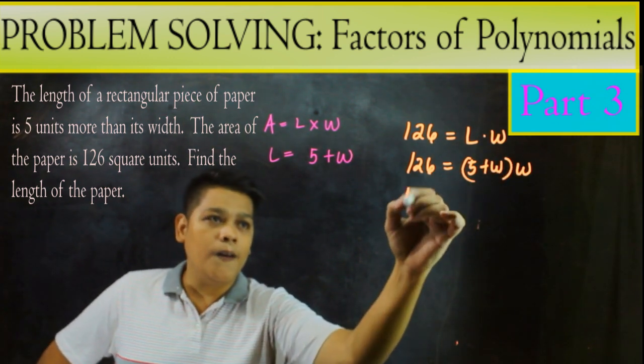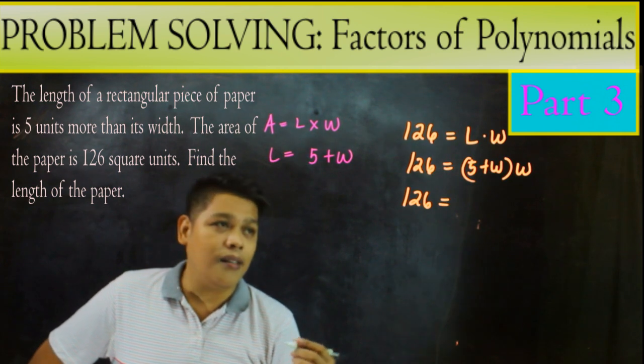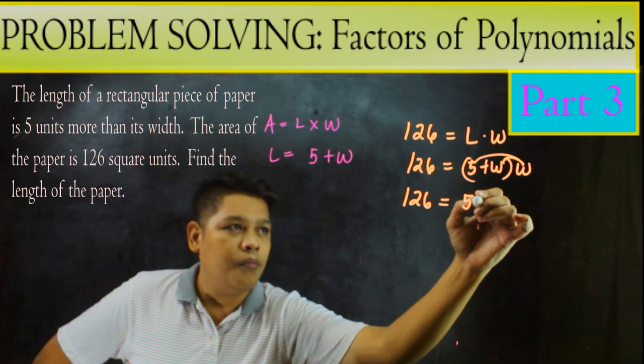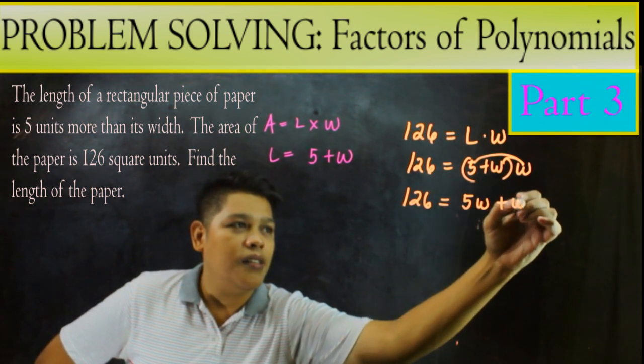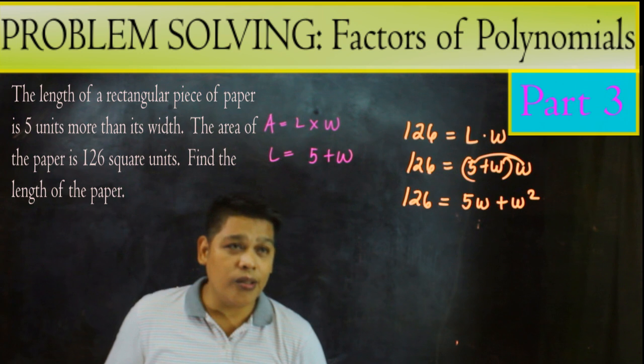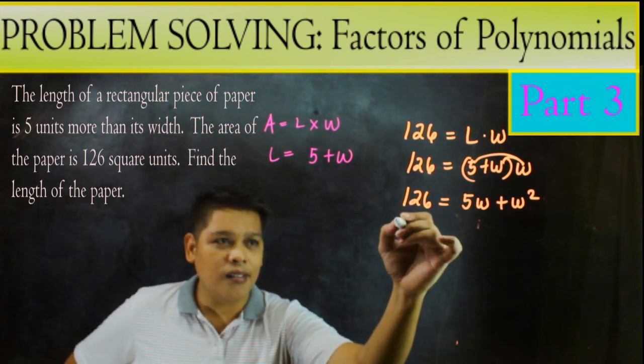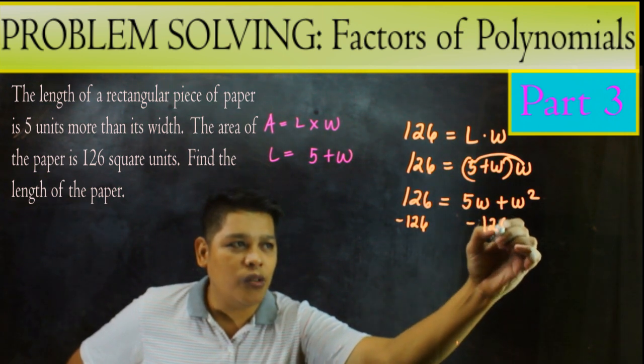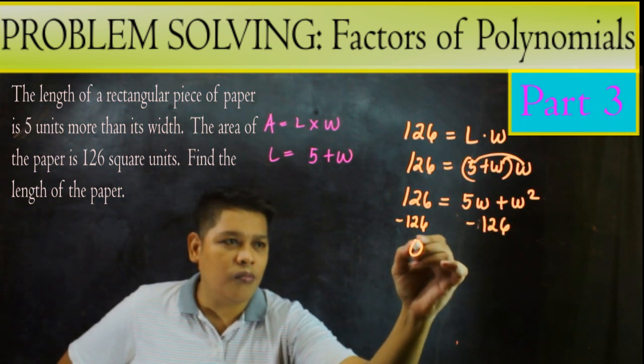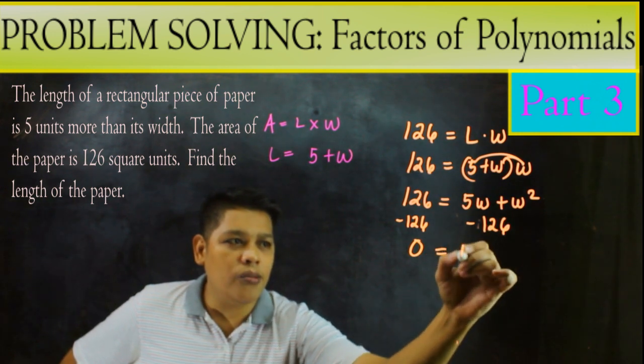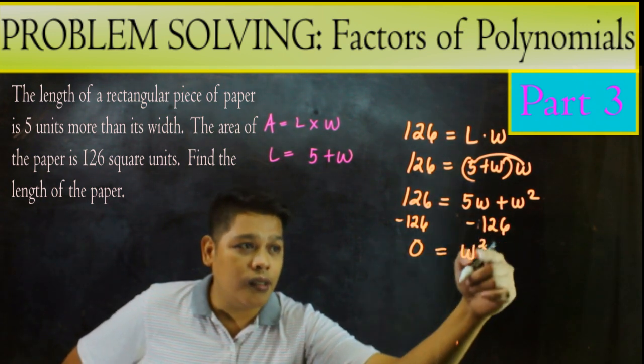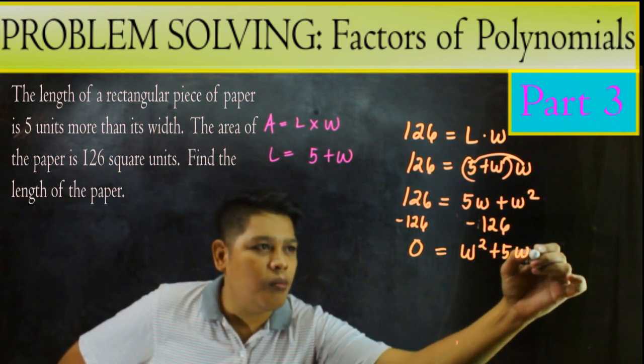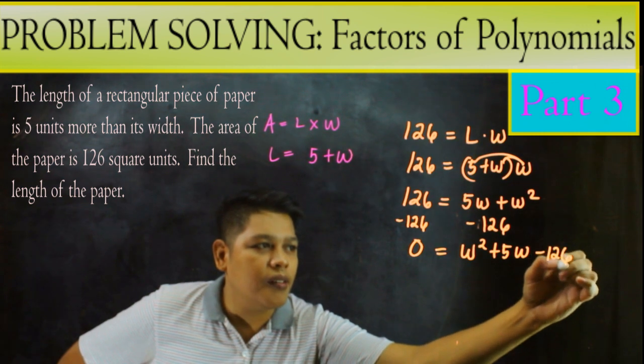So ang gagawin natin dyan, magkakaroon tayo ng quadratic. So W squared, so 5W plus W squared. Pag ni-rearrange natin ito, so magma-minus muna tayo ng 126 dito. At magma-minus tayo dito ng 126. Para 0 na lang siya. So 0 equals W squared.